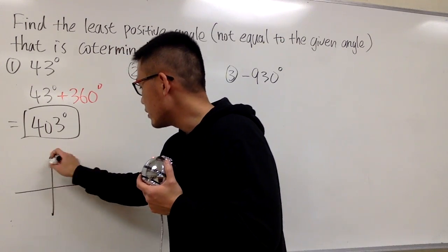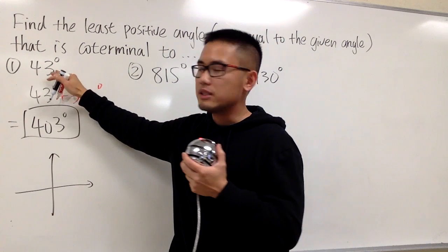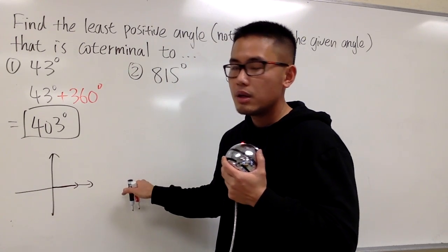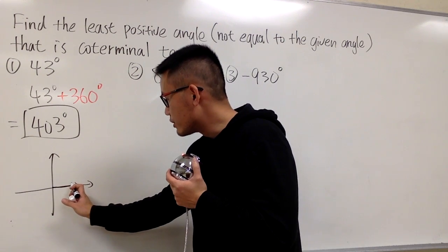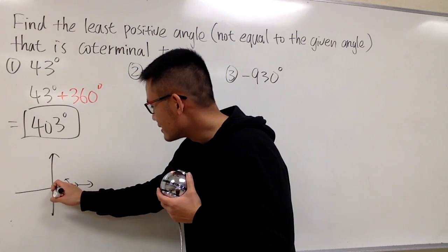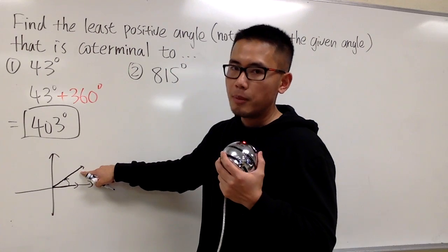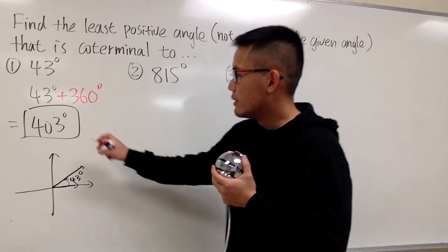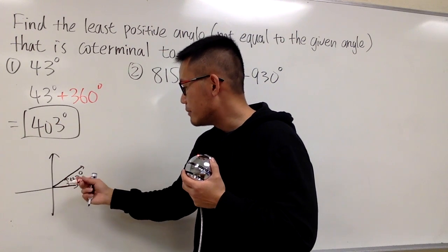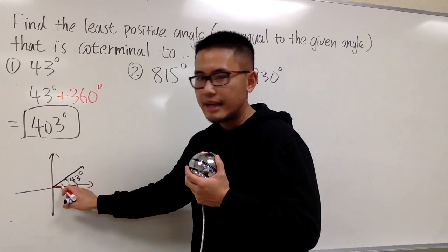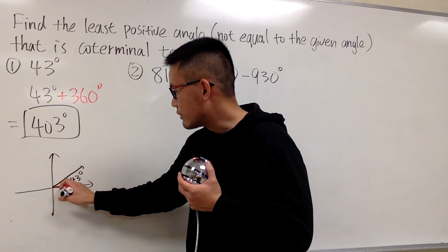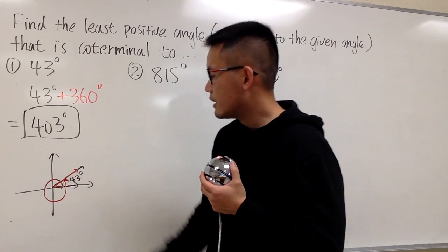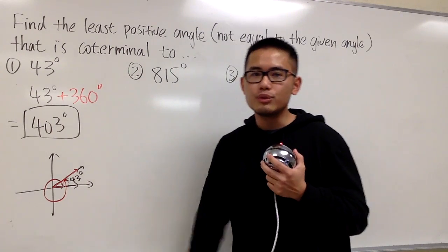Let me show you a picture. Every time when you are given an angle — this one is 43 degrees — you start counting from here. This is your starting position, the 0th degree. A positive angle means you turn this way, and you turn 43 degrees, so it's something like this. This is 43 degrees, and this is the terminal side of the original angle. Now the 403 degrees means we start from here again, turn 43 degrees plus another 360, and we end up with the same terminal side. That's it — just add one revolution.